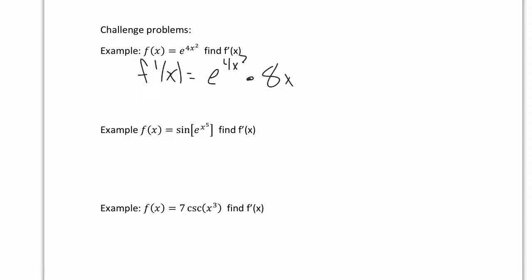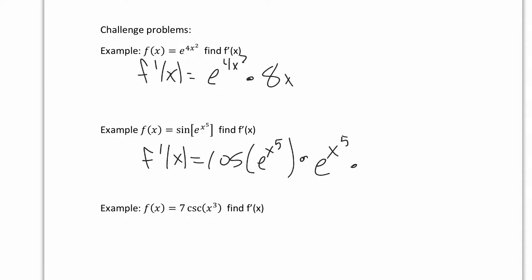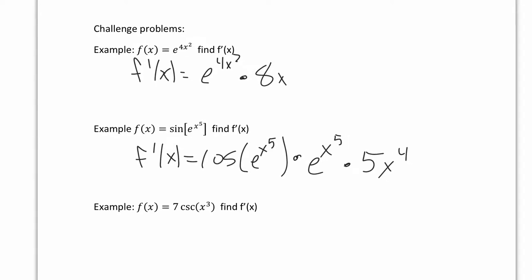Now let's look at the next one: sine of e to the power of x to the 5. The derivative — we'll start with the outside — will be simply cosine. Then e to the x to the 5 gets rewritten, times the derivative of e, which is e, and x to the 5 gets rewritten, times the derivative of x to the 5, which is 5x to the 4. When I first learned the chain rule, my calculus professor explained it was like peeling an onion — you have a layer of sine, a layer of e, and a layer of x to the 5, peeling back one layer at a time.